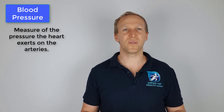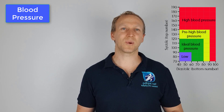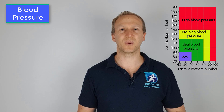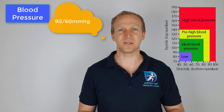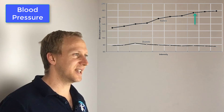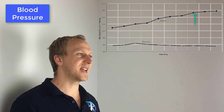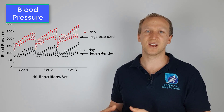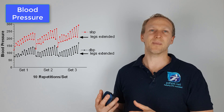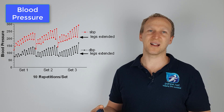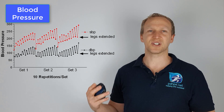Blood pressure is a measure of the pressure the heart exerts on the arteries when it pumps. Ideally, blood pressure should be below 120 over 80, but not too low. During aerobic exercise, systolic pressure rises and diastolic pressure decreases slightly. During resistance or strength training, pressure goes up during the lift and down as the weight is lowered, cycling with each contraction.